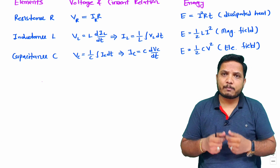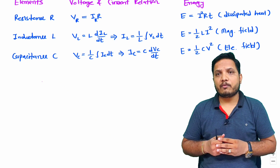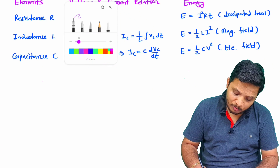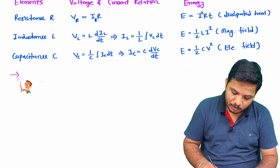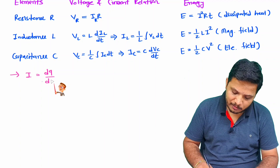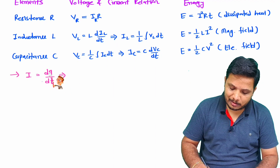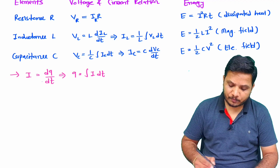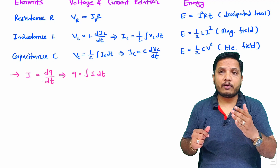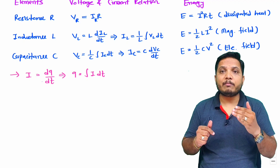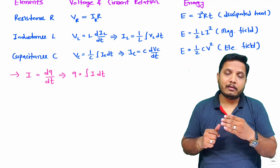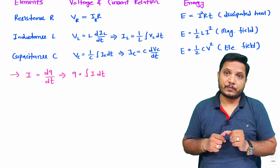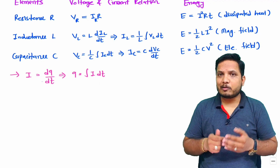One more basic concept is the calculation of charge from current. Sometimes you will be given a current value and need to identify how much charge there is. Current is the rate of change of charge with respect to time, so total charge equals the integral of i dt. If the current is a function of time, we can identify how much charge is stored by integration, placing appropriate limits.